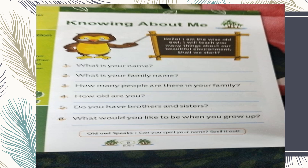Moving on to the next question: how many people are there in your family? The number can vary. Some students are living in small families and some are living in big families. Small families are those in which only parents and their children live. Big families are those in which parents live with their children and also grandparents and other relatives like uncles and cousins.